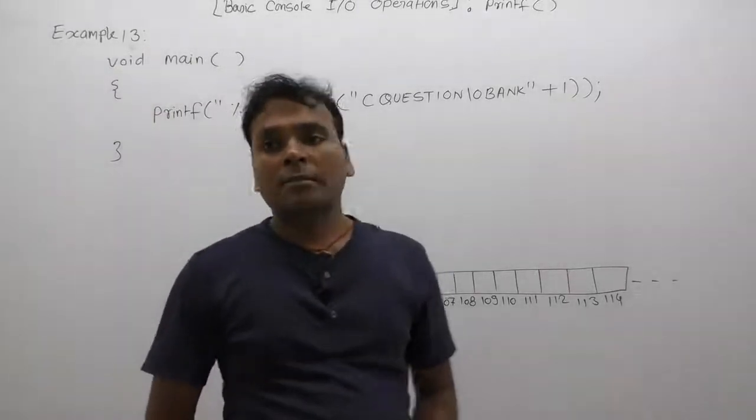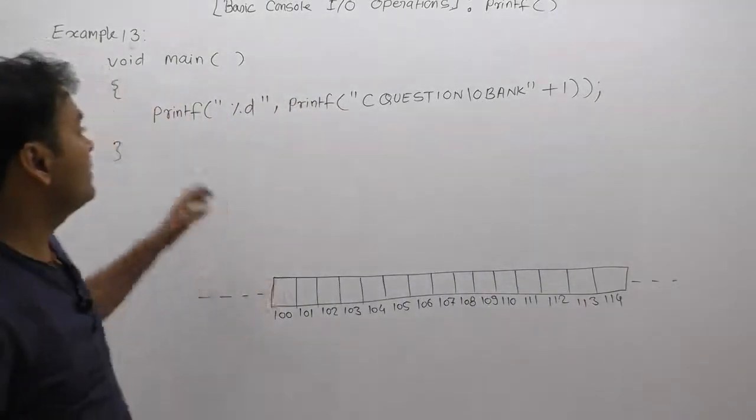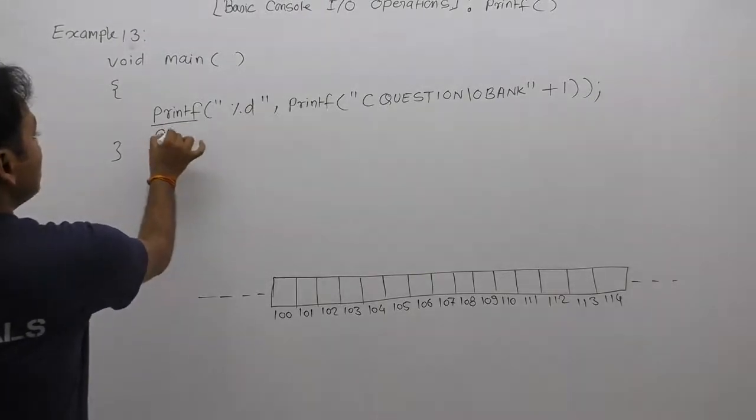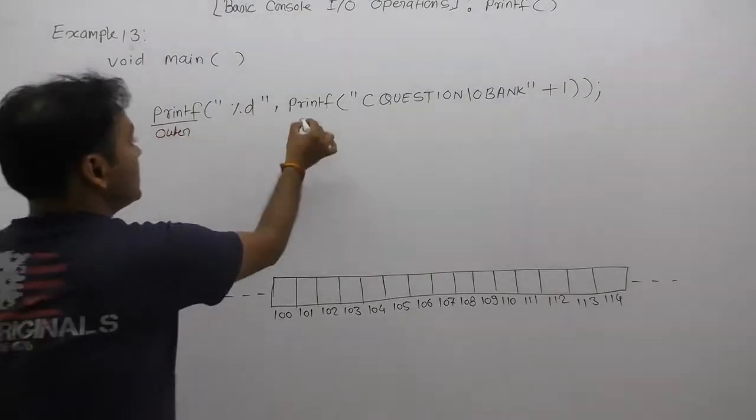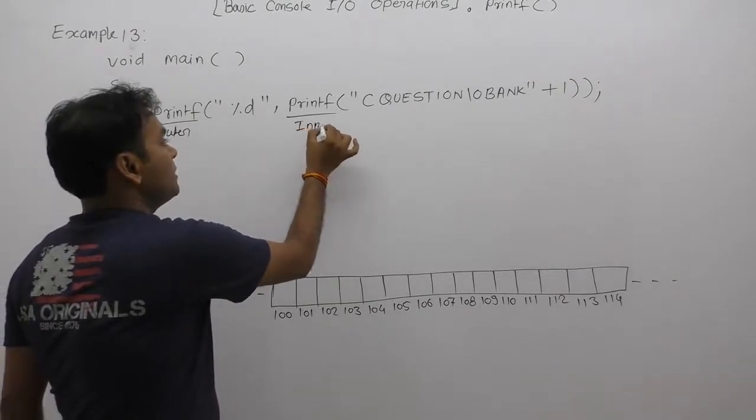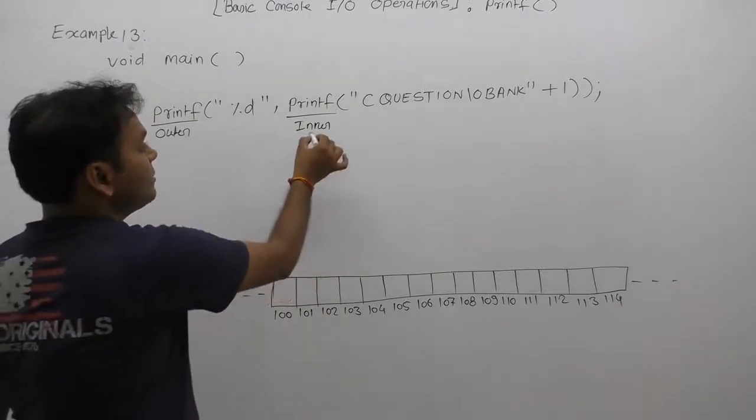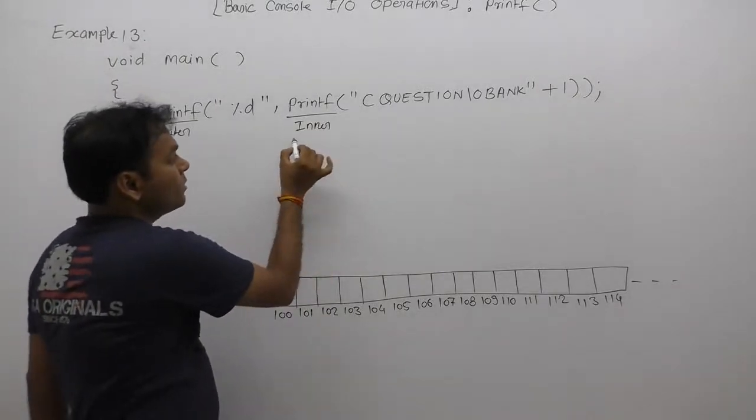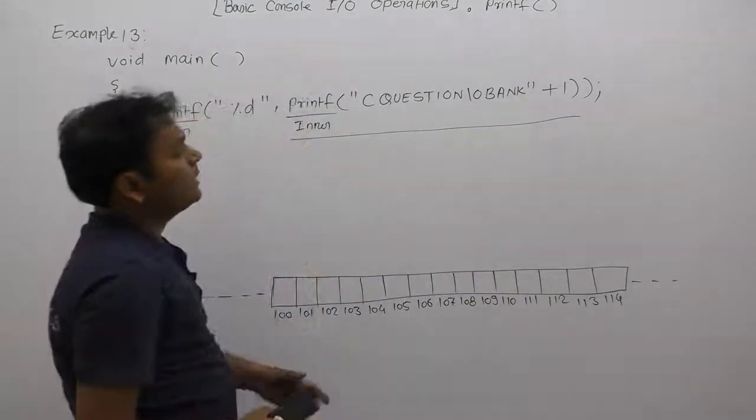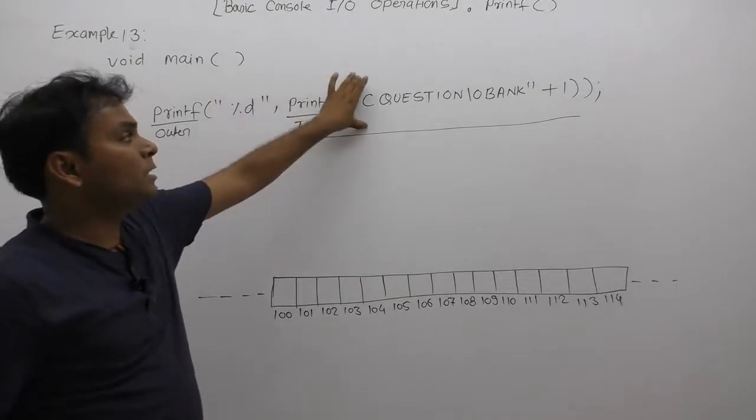Now let's see another example. In this case, we are calling printf in nested form. This printf is the outer function and this one is the inner function. As we discussed, in case of nested function calling, the inner function will be executed before the outer function. Therefore, we are concentrating on the inner function before processing the outer. According to the inner printf...